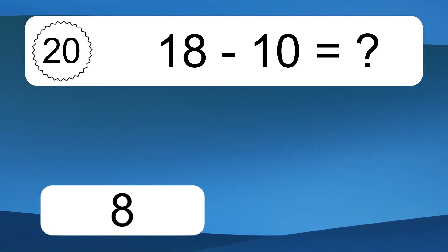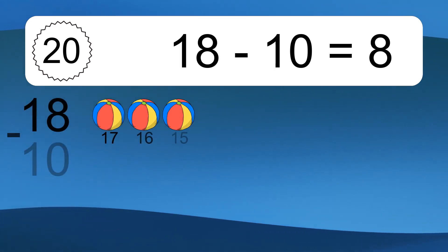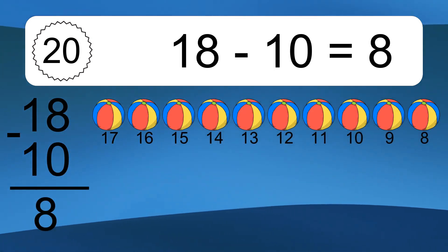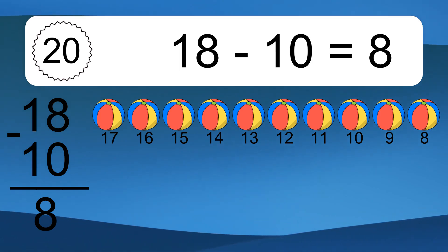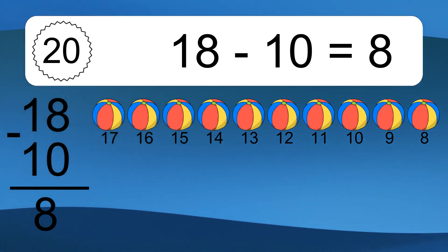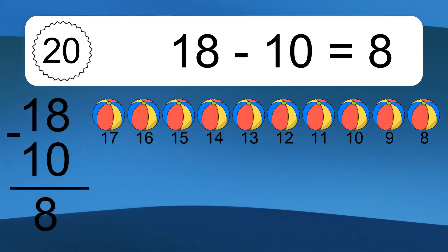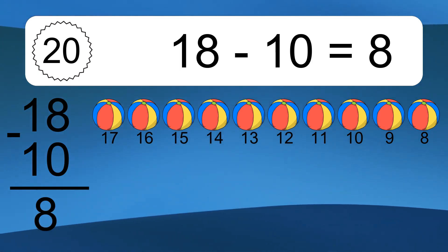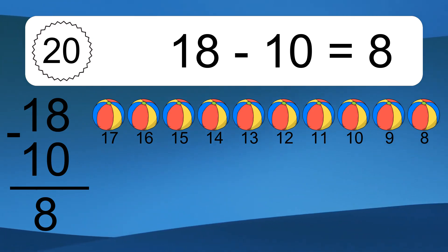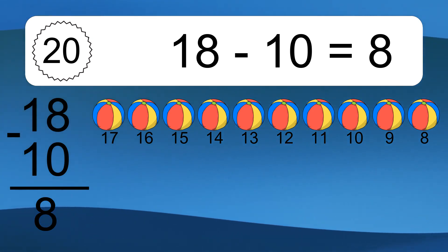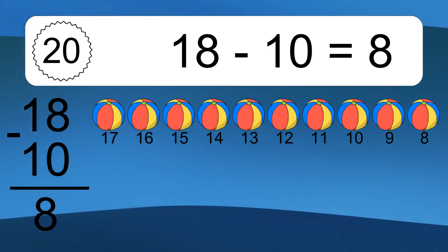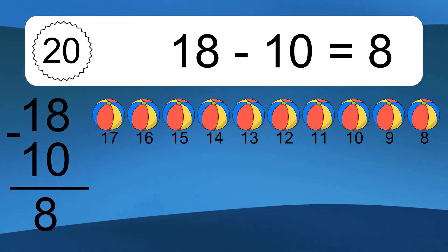18 minus 10 equals what? 18 minus 10 equals 8. Let's count it: 17, 16, 15, 14, 13, 12, 11, 10, 9, 8.